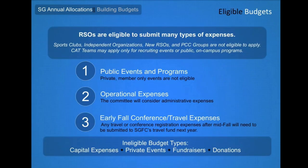Eligible budgets will come from RSOs. There are several categories of organizations that have alternate funding sources and will not submit budgets through this annual process. New RSOs, RSOs in the Program Coordinating Council, and Sports Clubs are not eligible for annual. Additionally, RSOs that are part of the Coalition of Academic Teams will only submit budgets for recruiting events and on-campus programs, not for travel or competition.